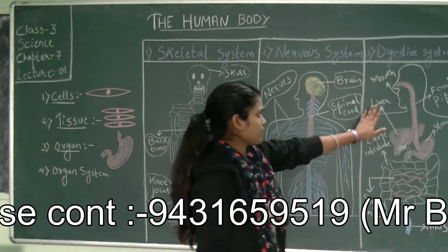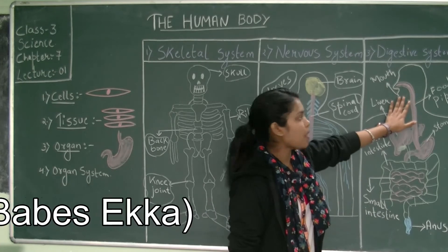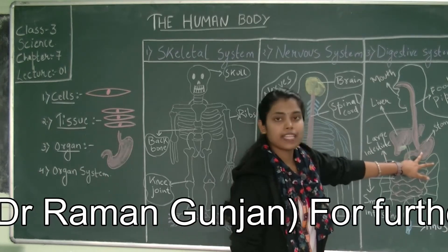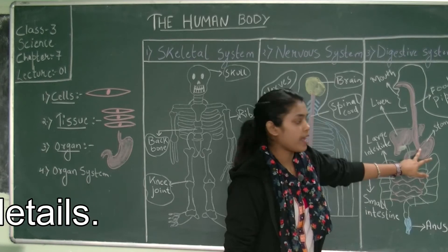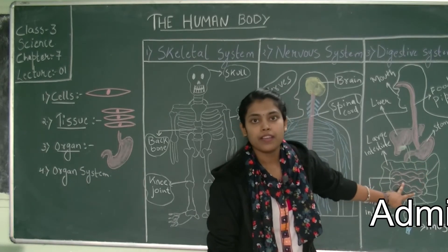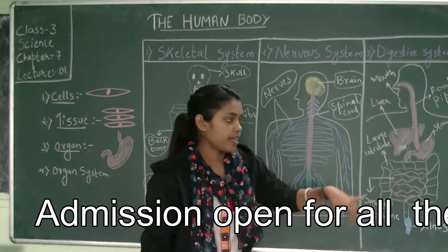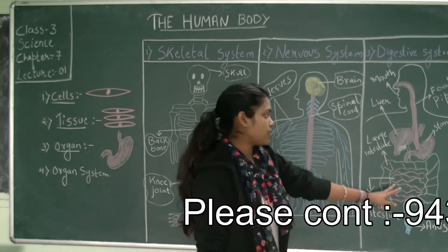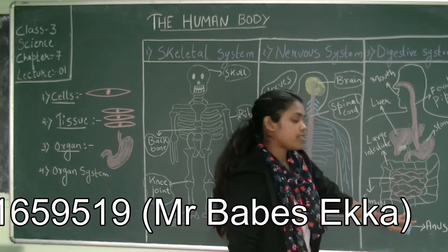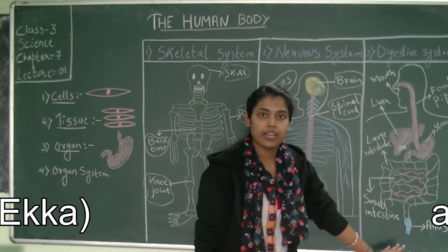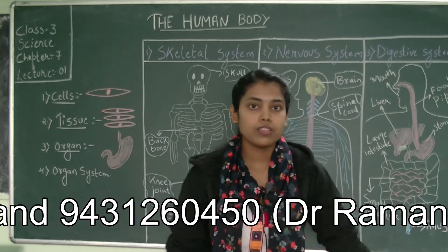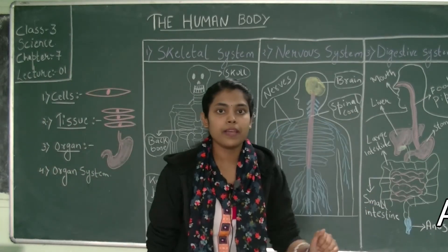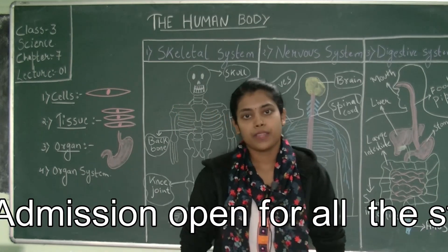To summarize: the food we take from the mouth is chewed, and then travels through the food pipe into the stomach. Digestion takes place in the stomach, then the food comes to the small intestine which absorbs the nutrition and further digests the food. After that, it comes to the large intestine and then to the anus from where it is removed from the body. So this was all about the skeletal system, nervous system, and digestive system. There are more systems which I will be explaining in the next video.